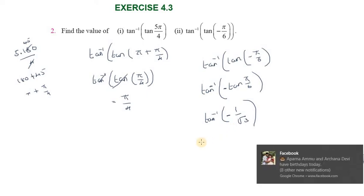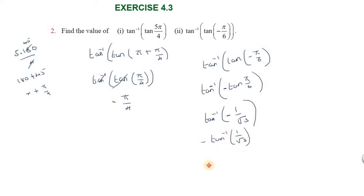Here we can write minus tan inverse of 1 over root 3. Tan inverse of 1 over root 3 equals π/6, so the final answer is minus π/6.